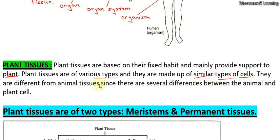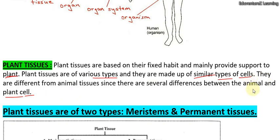Plant tissues are different from animal tissues. Of course, plant cells and animal tissues are different because plant cells and animal cells are also different. Since there are several differences between animal and plant cells, plant tissue and animal tissue are different.